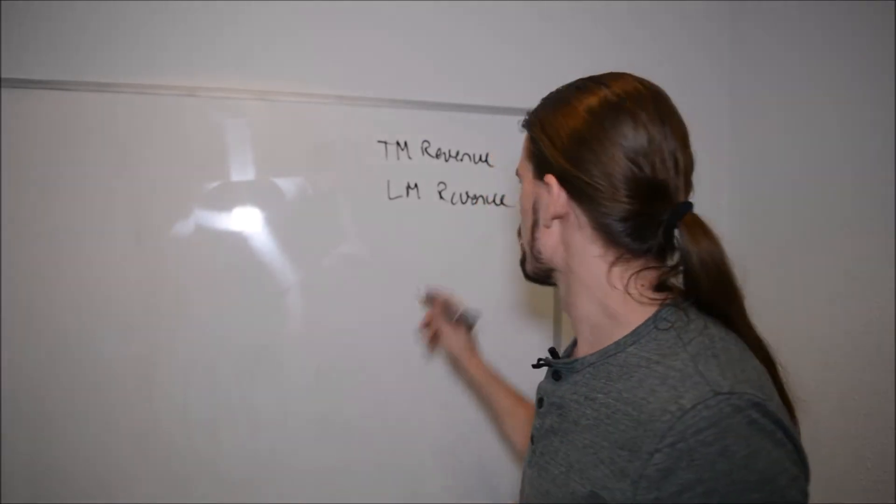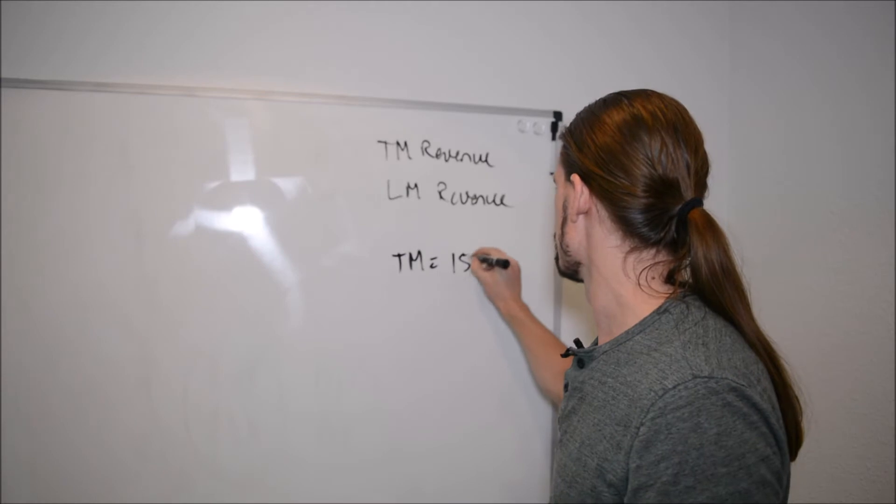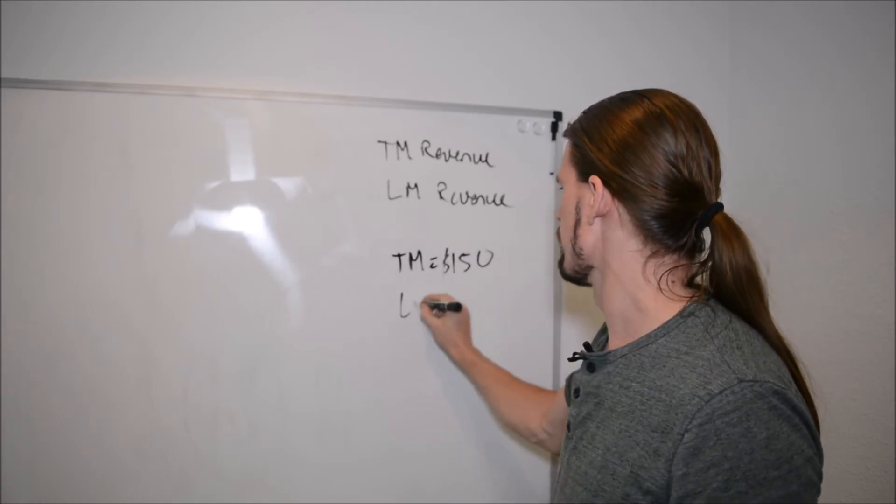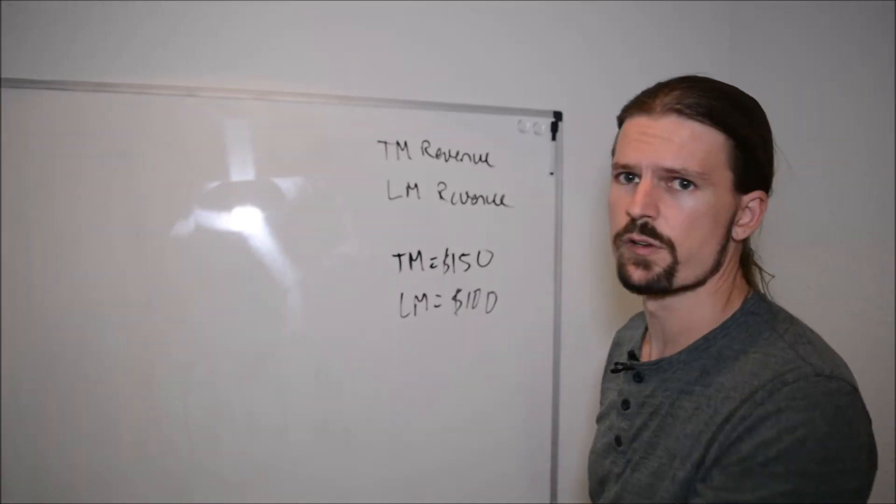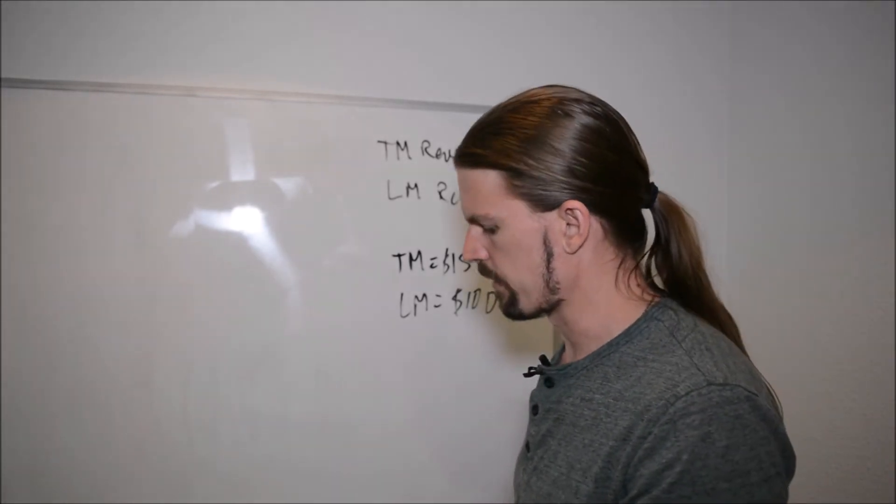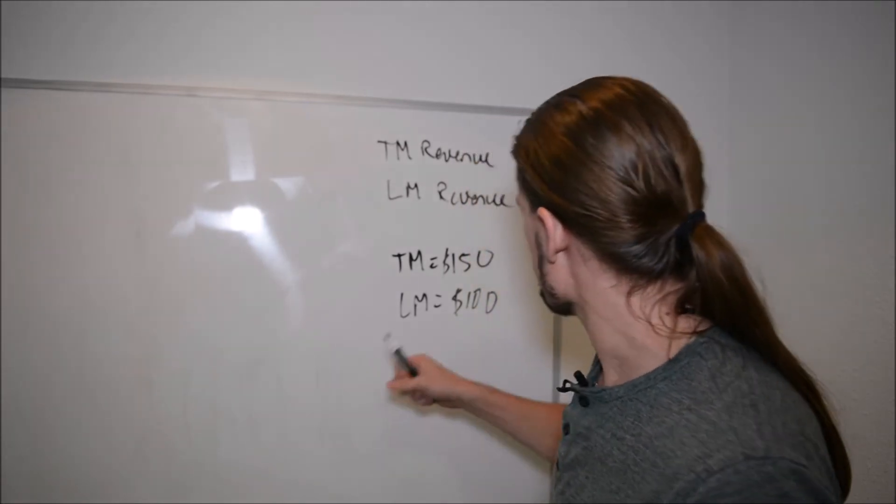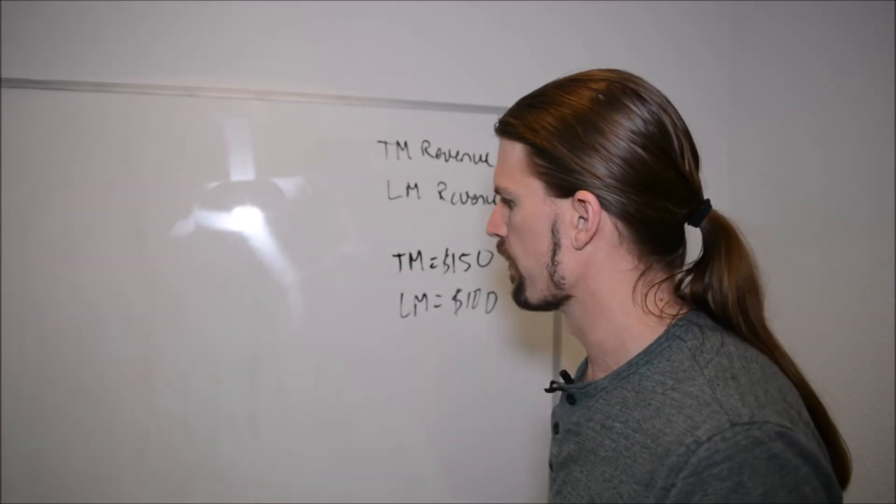And then once you have those numbers, let's just give an example, let's say that this month is $150 and last month is $100, right? Just real simple numbers to work with. So what you're going to do is you're going to have to tell the computer to calculate the percent difference from this month over last month.